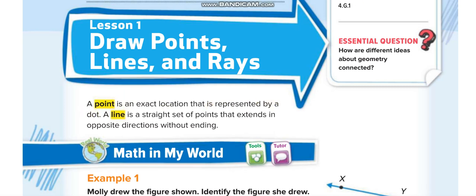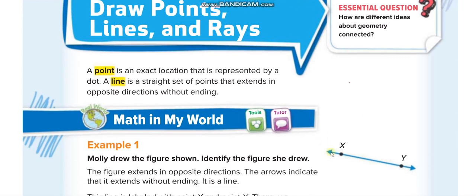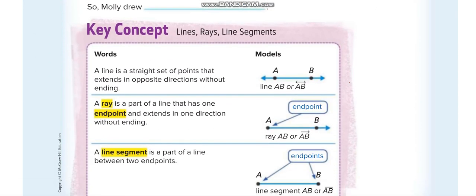For example, if I put a dot here and name it A, then this dot is known as Point A. Similarly, this dot is Point X and this one is Point Y. Now in this lesson we have three more things: lines, rays, and line segments.